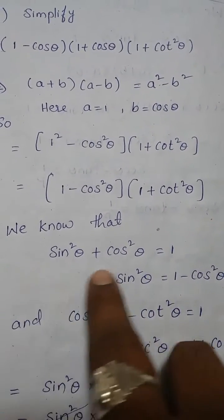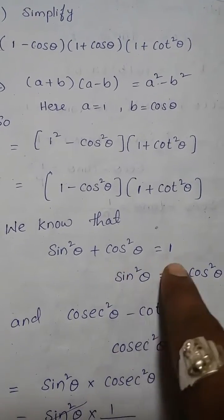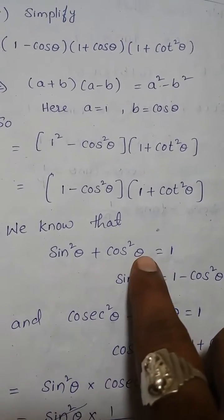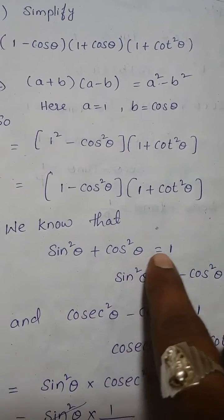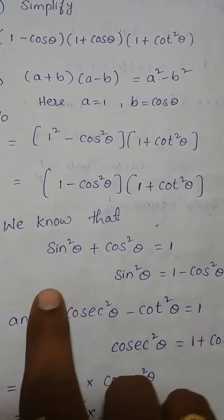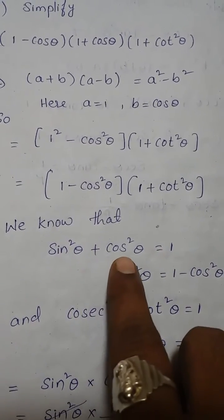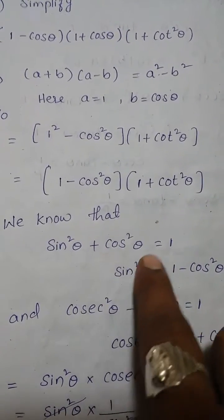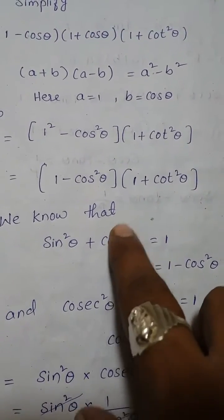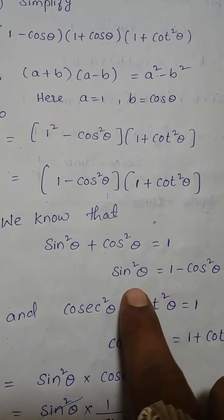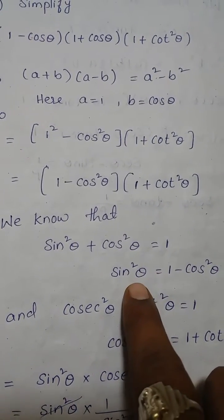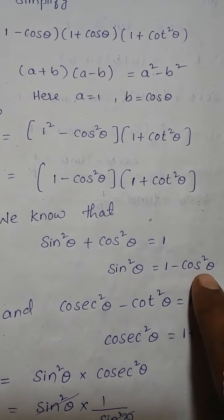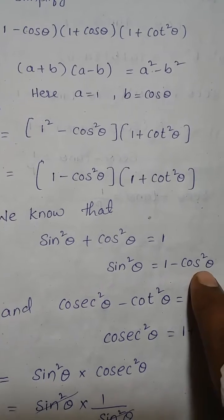Again, we know the trigonometric identity: sin square theta plus cos square theta is equal to 1. If we transpose cos square theta to the right side, the remaining is: sin square theta is equal to 1 minus cos square theta.